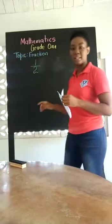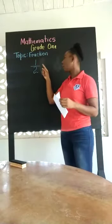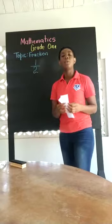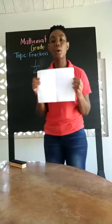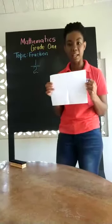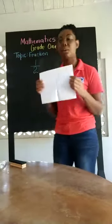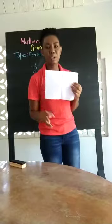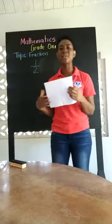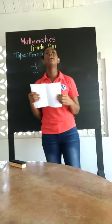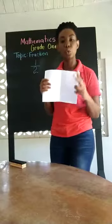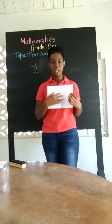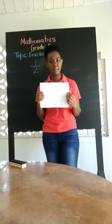The fraction that we use to represent a half is one over two. The bottom number tells us how many parts we have. So how many parts do we have? We have two parts. But what kind of parts do we have? We have two equal parts.